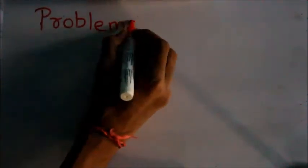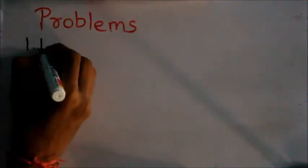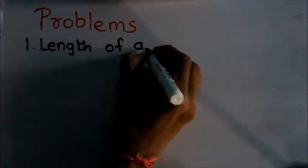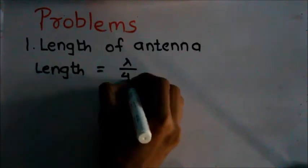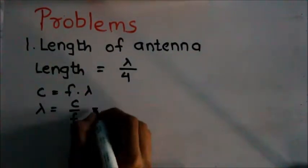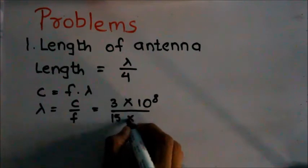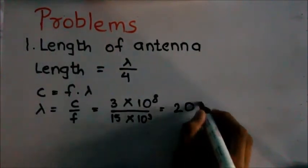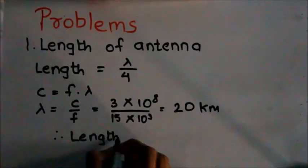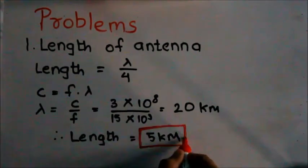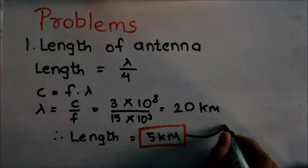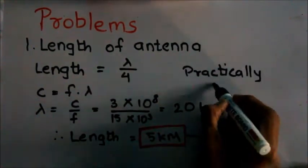The first problem is length of antenna. For effective reception, the length of antenna should be one fourth of the wavelength of the signal. This is the relation between the speed of the signal, frequency, and wavelength. As radio waves are electromagnetic waves, their speed is equal to speed of light. For low frequency signals like 15,000 hertz, the wavelength is 20 kilometers, so the length of the antenna should be at least 5 kilometers for effective reception, which is practically impossible.